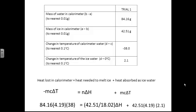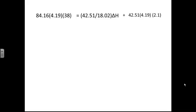Now we take those values and work them out. Starting from the left, 84.16 times 4.19 times 38 gives us 13,400 joules. If we round to three sig figs, we get 13,400 joules.